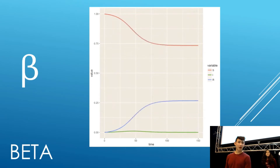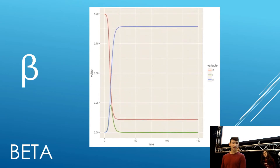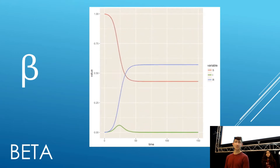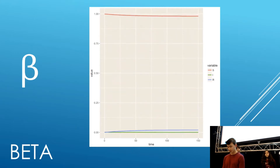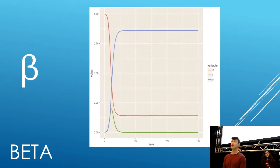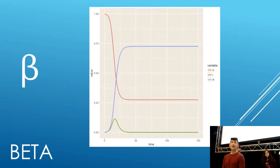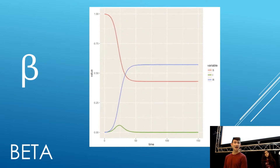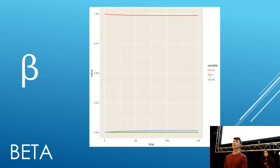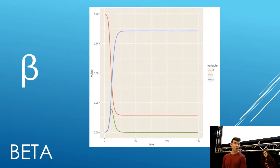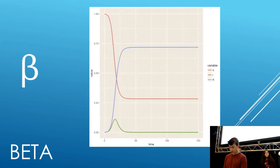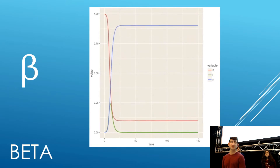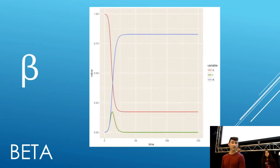There are two main parameters in the SIR model. The first being beta. Beta controls how often contact between a susceptible person and an infected person results in the susceptible person becoming infected. If they have an X percent chance of coming into contact with the disease, and a Y percentage chance of this contact resulting in infection, beta will equal X times Y. When beta equals zero, individuals have a zero percent chance of coming into contact with the disease, and therefore the graph will stay constant.